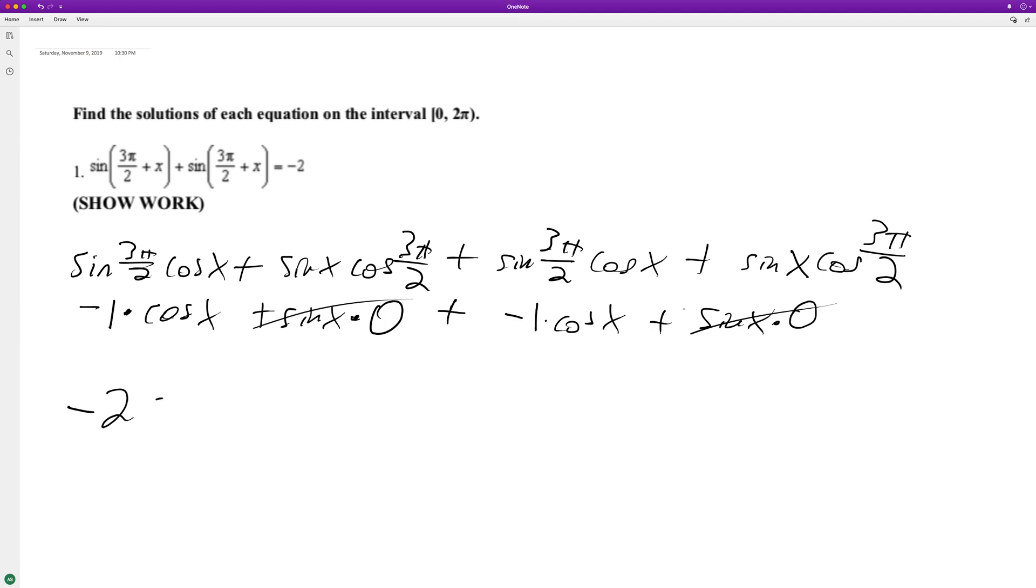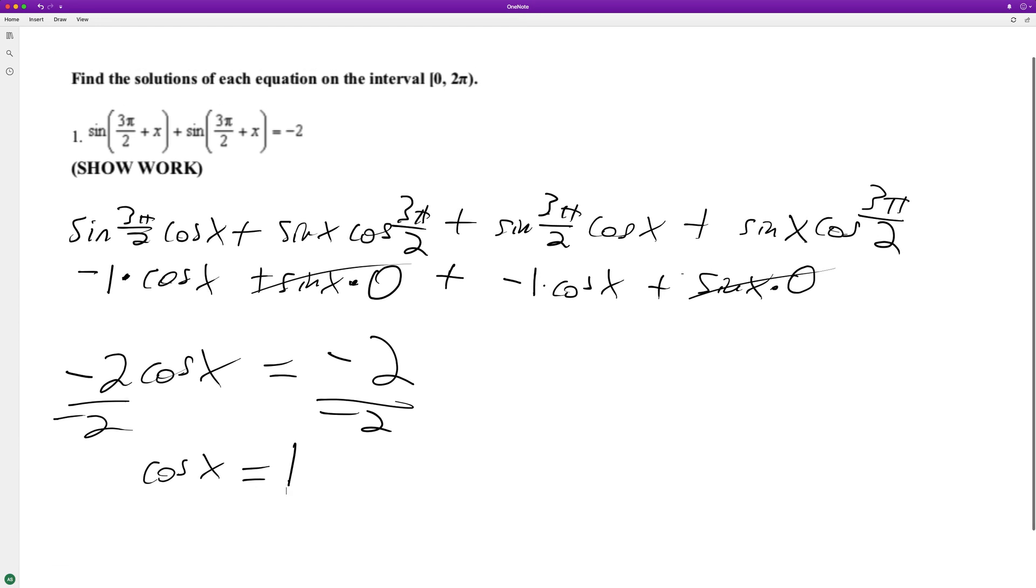That becomes negative 2 cosine x equals negative 2. Divide by negative 2, we get cosine of x is equal to 1. So where does cosine x equal 1?